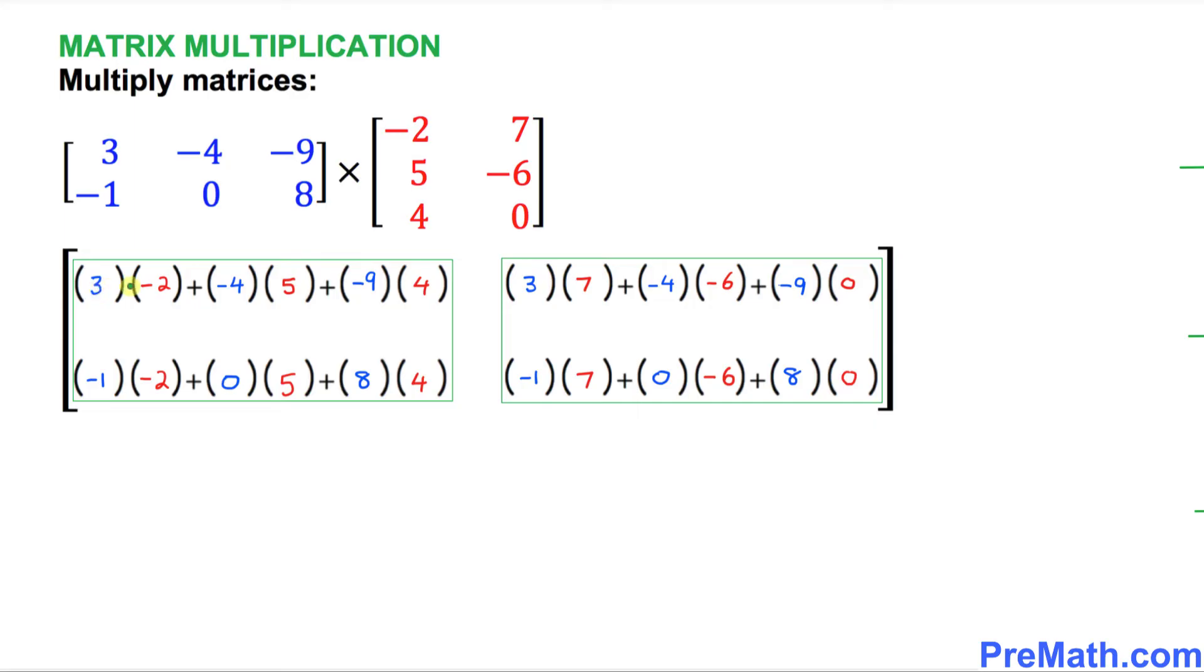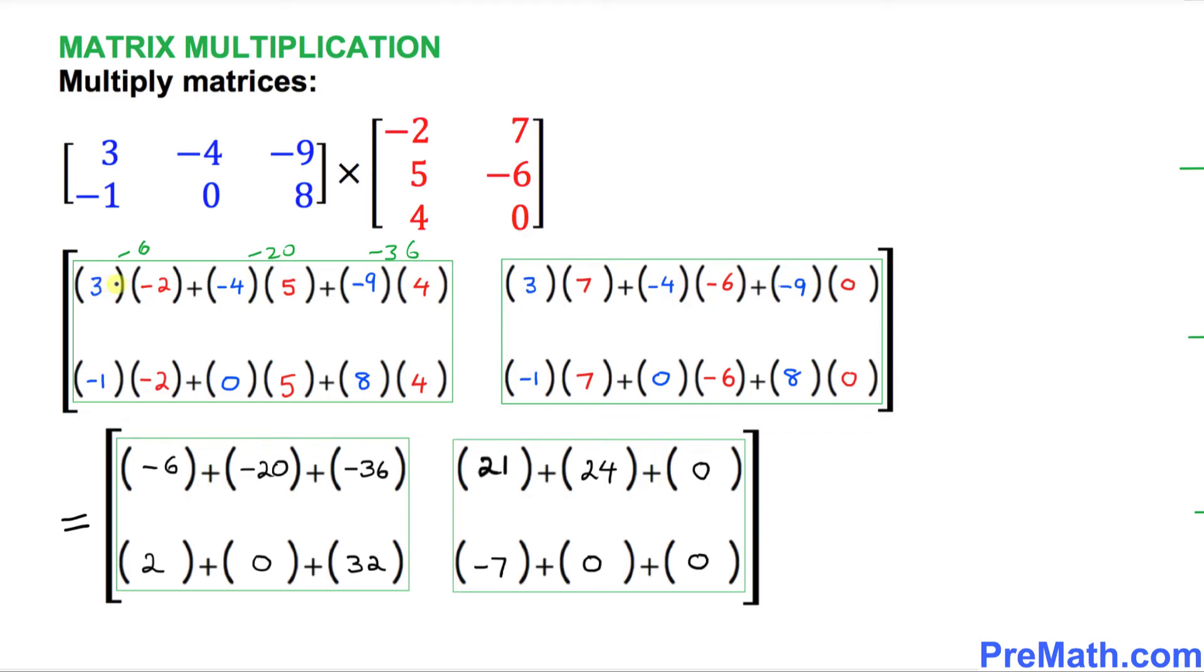Now in the next step, we are going to multiply these parentheses. 3 times -2 is going to become -6. -4 times 5 becomes -20. -9 times 4 is going to become -36. Likewise, we're going to multiply out all these parentheses. And here I put down this -6, -20, -36 in single parentheses, as you can see, for all these multiplications.